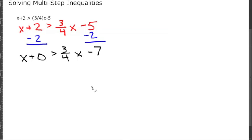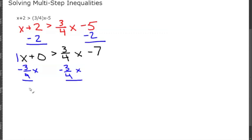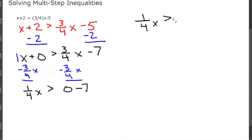Negative 5 minus 2 gives us negative 7, so we have X is greater than (3/4)X minus 7. Now we want to get the (3/4)X over to the other side, so we subtract (3/4)X from both sides. 1X minus (3/4)X leaves us with (1/4)X, which is greater than negative 7.